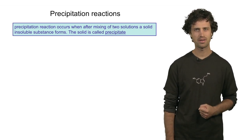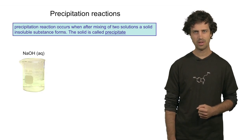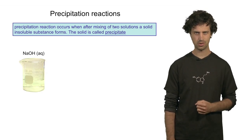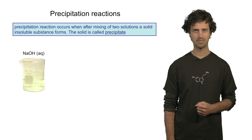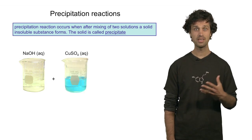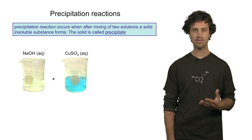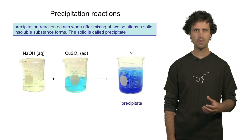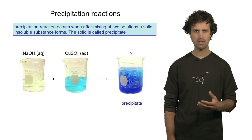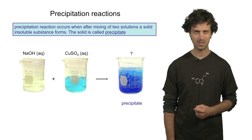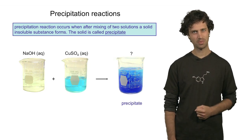Now let's try to find out what happened in the reaction. We started with two clear solutions. The first one was sodium hydroxide. The second one, copper sulfate. And after mixing, we found a cloudy, darker blue solution.